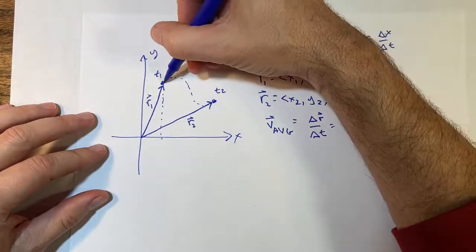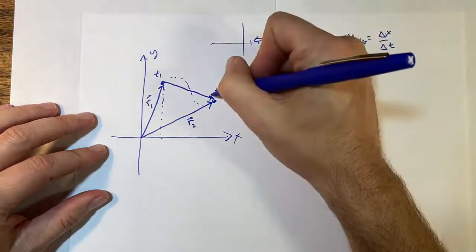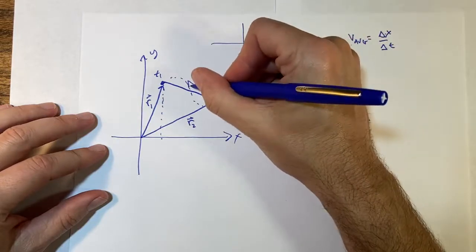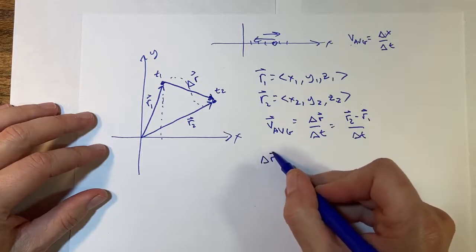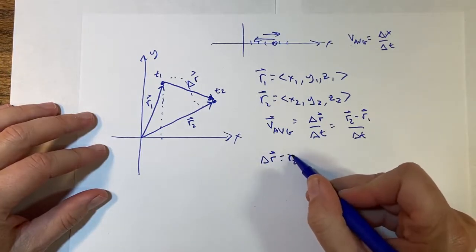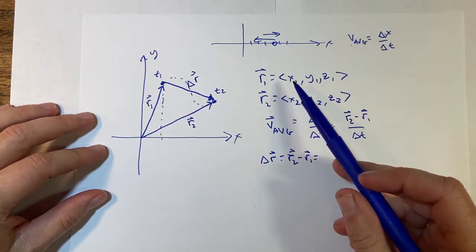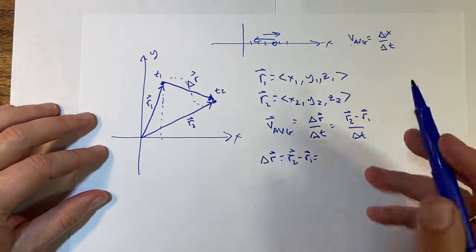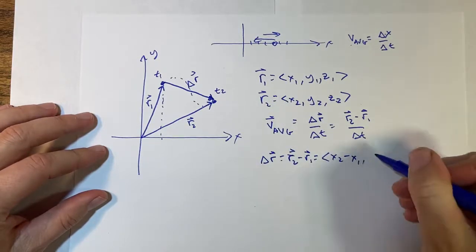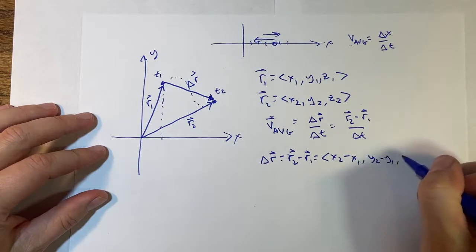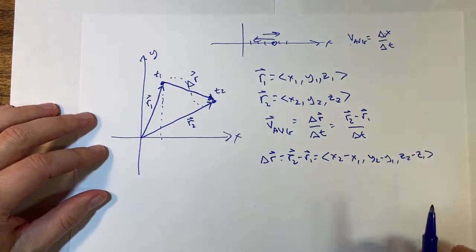If I draw this, delta r goes from r1 to r2. I can calculate that: delta r equals r2 vector minus r1 vector. Since we subtract the components, this is just (x2 − x1, y2 − y1, z2 − z1), and these are all numbers.